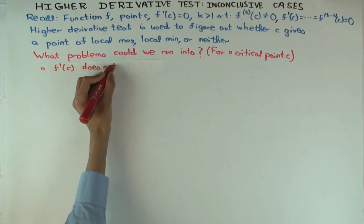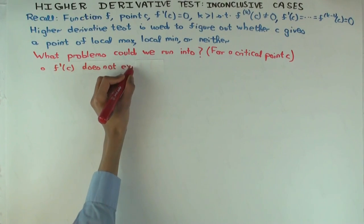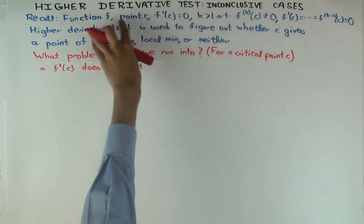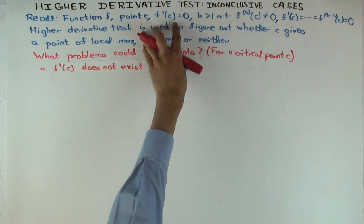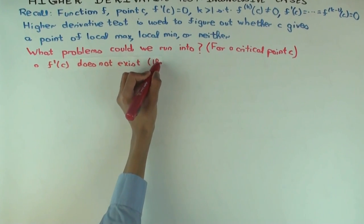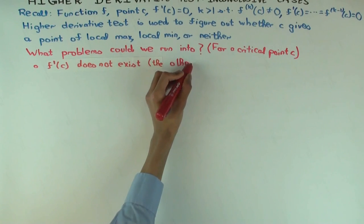Because we know if the derivative exists for a critical point, it has to be 0. So that's this situation. But there could be the other type of critical point where the derivative doesn't exist.